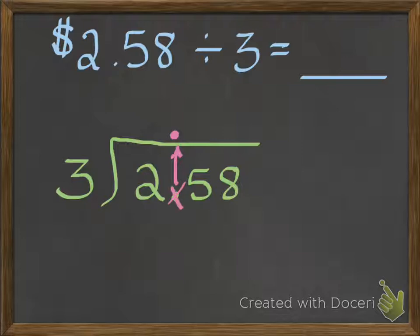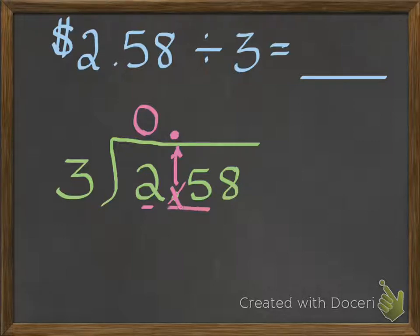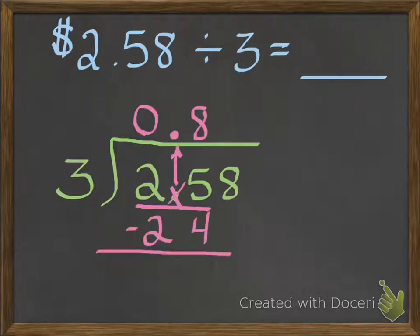You can ignore the decimal point that's in the dividend for right now, because we already put it up here in the quotient. Then we just start dividing just like we have before. We look at the first digit in the dividend: two. Can two be divided by three? No, it can't — it's too small. So I'm going to just go ahead and put a zero up there. I'm going to go to the next digit. Now instead of just two, I'm looking at twenty-five. Twenty-five can be divided by three. I know that three times eight is twenty-four, which is very close to twenty-five. So then I subtract: twenty-five minus twenty-four is one. And I bring down the next digit, which is eight.